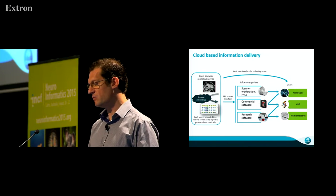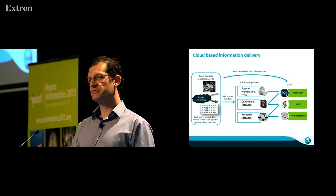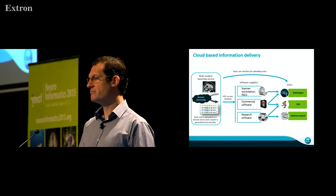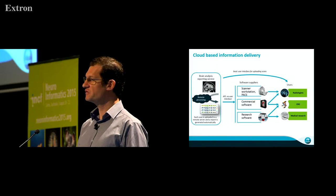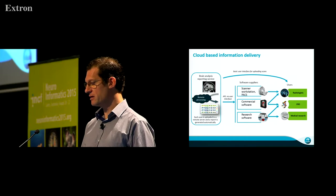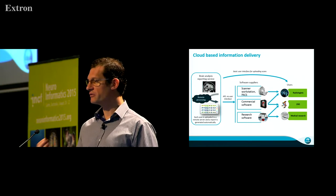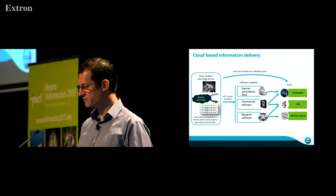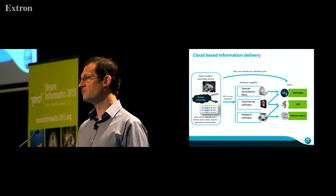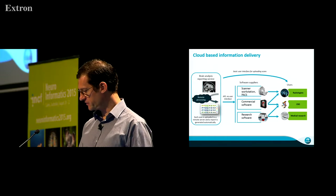The solution we have worked on over several years is a cloud delivery approach. We have image processing algorithms running on a server that can be accessed via a web interface, where end users upload images and download results. Using an API, we can also interface with the three main delivery channels: scanners can send us images directly, commercial software vendors can integrate with us, and research software can link to our cloud computing servers.